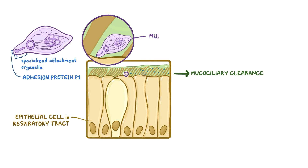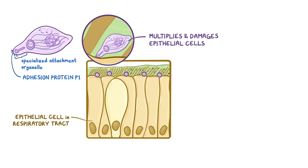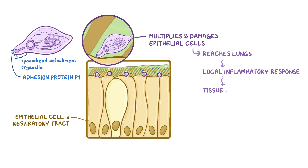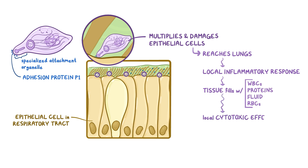So mycoplasma pneumoniae multiplies and damages the respiratory epithelial cells in the process. When they reach the lungs, this starts a local inflammatory response, and lung tissue fills with white blood cells, proteins, fluid, and even red blood cells if a nearby capillary gets damaged in the process, leading to a local cytotoxic effect.